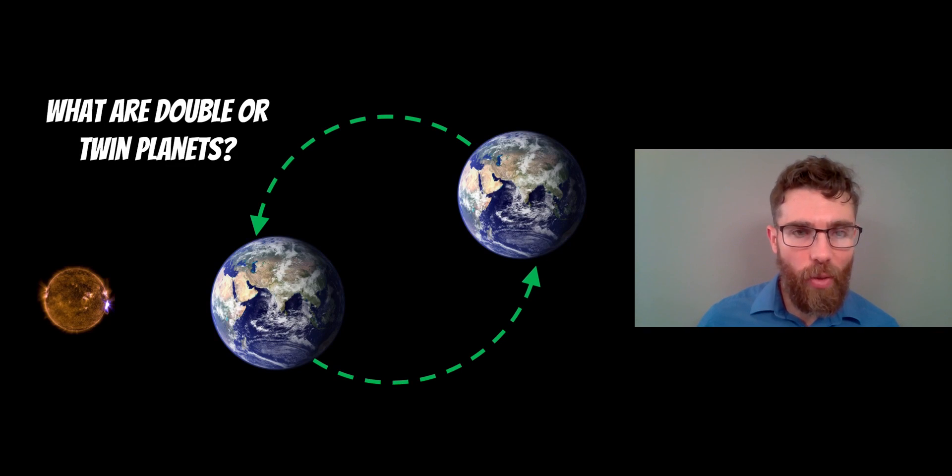Welcome to this video. In this video we're going to have a look at double planets, twin planets, or binary planets. It all means the same thing really. This is where you've got two planets basically orbiting each other which then orbit a star. And are they common really and do they exist?